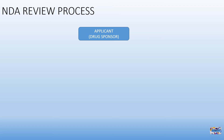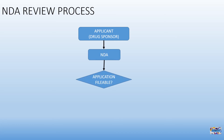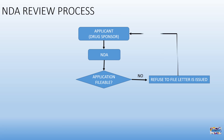New Drug Application Review Process. The Applicant is the drug sponsor or manufacturer who submits the New Drug Application. The application must contain all information to allow a review. If not, a refuse-to-file letter is issued. If the application is missing one or more essential items, no further review takes place until the applicant provides the requested data. If the application contains all essential components, it is reviewed by the Center for Drug Evaluation and Research (CDER).